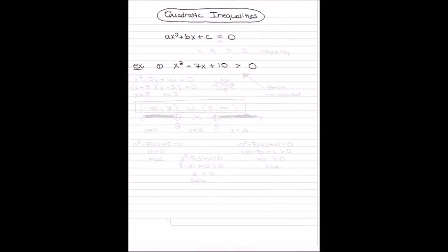Let's take a look at a couple of quadratic inequalities and see if we can solve them. A quadratic inequality looks just like a quadratic equation, except instead of having the equal sign, we have an inequality. We could have a less than, a less than or equal to, a greater than, or a greater than or equal to. These are all our inequalities.